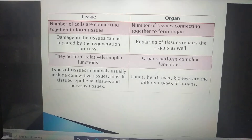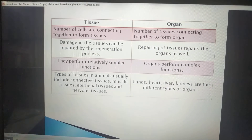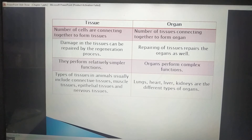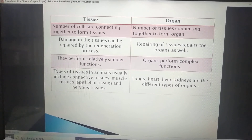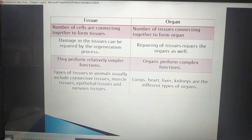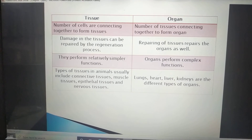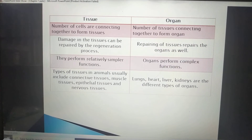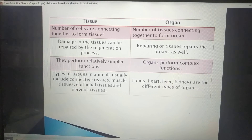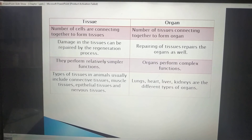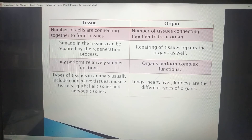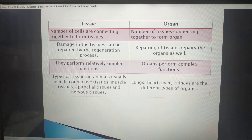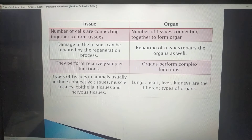The next difference is between tissue and organ. A number of cells connect together to form tissues. Cell is the basic structural unit of our body — many cells connect to form tissues, and many tissues connect together to form organs.